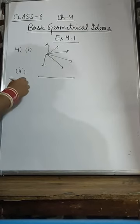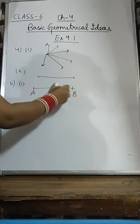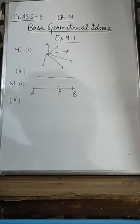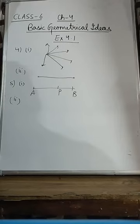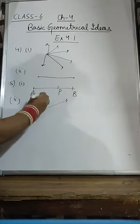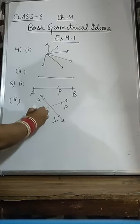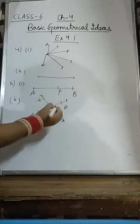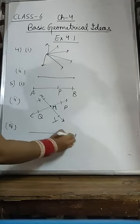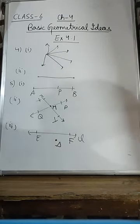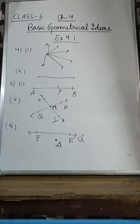Now we are coming to question number 5. We have to draw a line segment AB containing point P on the line. Next, two lines which are intersecting at one point can be drawn like this — two lines XY intersecting at a common vertex, that is point M. In the third part we have to draw a line L with points E and F such that point D lies outside.